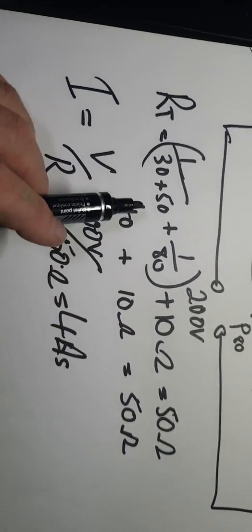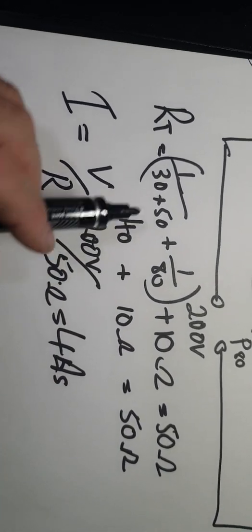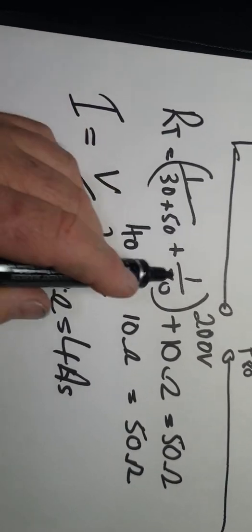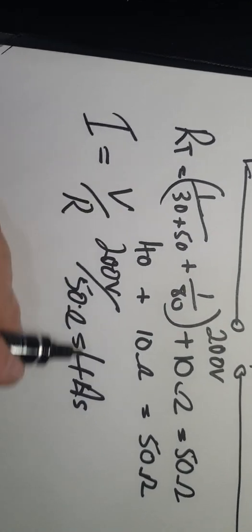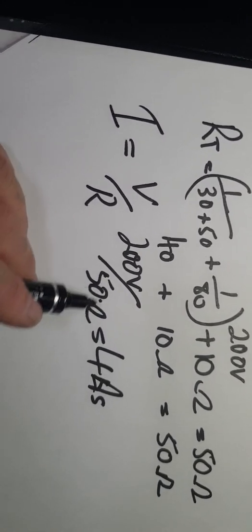When we have a look over here, we have the 40 ohms, which is the value of these three resistors here. So what I've done is I found the current: 200 volts divided by 50 ohms gave me 4 amps.